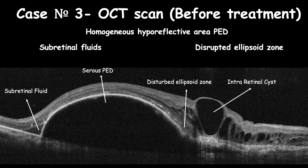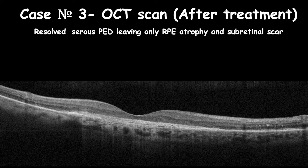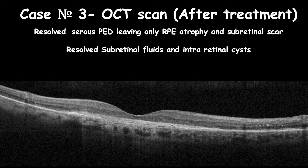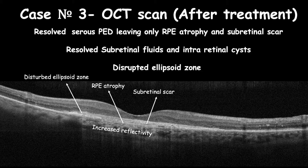Diagnosis is wet AMD with serous pigment epithelial detachment. This patient was managed with monthly intravitreal aflibercept for three consecutive injections. Post-treatment OCT cross-section shows resolving of both subretinal fluid and serous PED, with improved vision to counting fingers only, limited by subretinal scar formation and ellipsoid zone disruption. The patient was followed up using a PRN protocol.